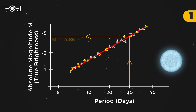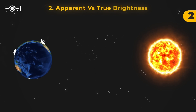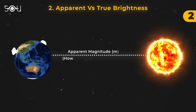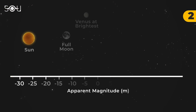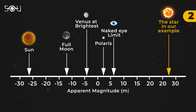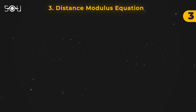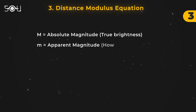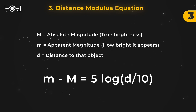So if the star took 30 days to go through a full cycle, its absolute magnitude or true brightness is minus 4.85. The second step involves comparing apparent and true brightness. The star's apparent brightness, or how bright it appears from Earth, can be measured with telescopes — let's say it turns out to be 24. The naked eye limit is 6, meaning the star in our example is about 16 million times fainter than what we can see with the naked eye. The third and final step is the brightness-distance relationship, using a simple equation in astrophysics known as the distance modulus equation.